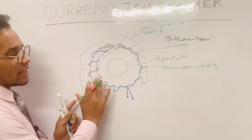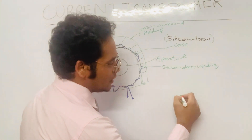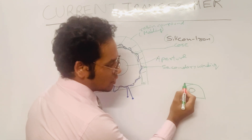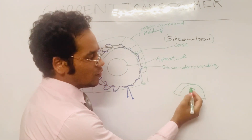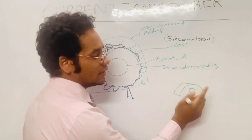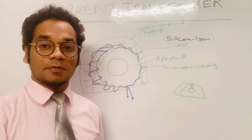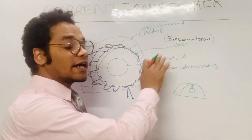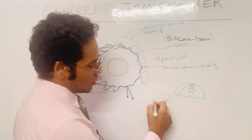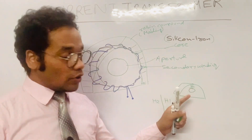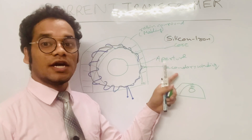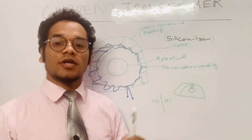This current transformer has an aperture, and in a 3D diagram it has two faces. One face is marked as H1 by some manufacturers and the other side is marked as H2. So on one side you will see H1 and on the other side of this current transformer you will see the marking H2.